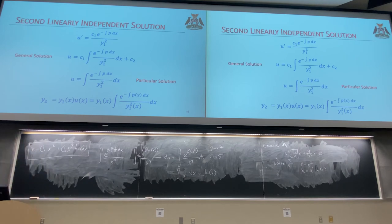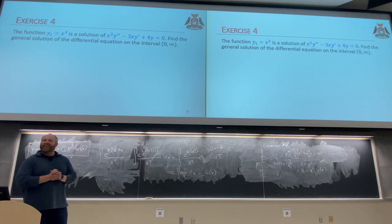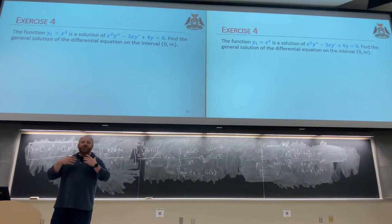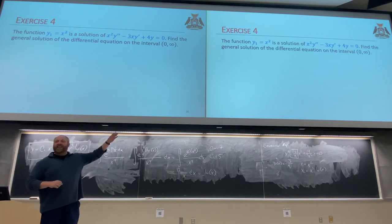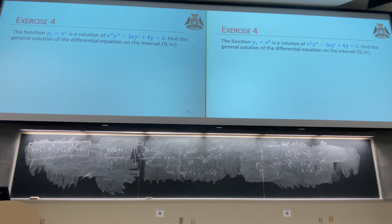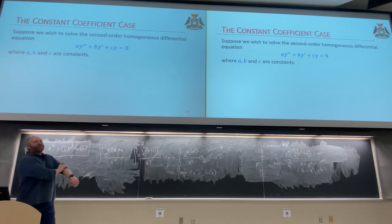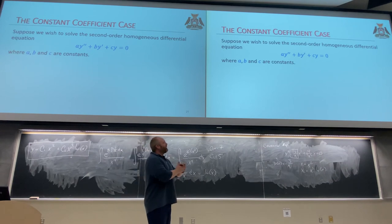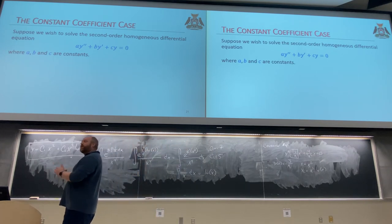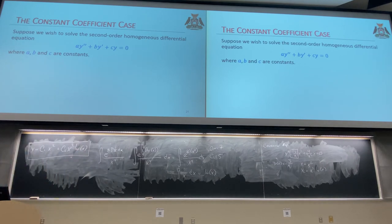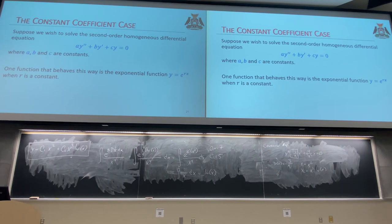Now let's move to more fun things — special cases where we can figure out solutions without going through that nightmare. We'll look at constant coefficients: when a, b, and c are just constants (with a ≠ 0). I'm looking for some y that when I derive it twice and plug in, gives left-hand side equal to right-hand side.